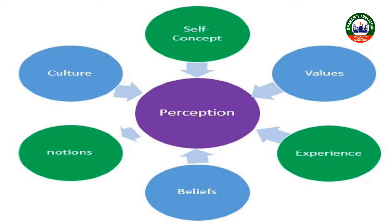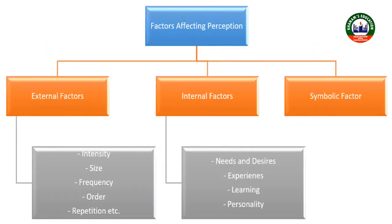The first factor is perceptual learning — based on past experience or any special training that we get. Every one of us learns to emphasize some sensory inputs and to ignore others. Experience is the best teacher for such perceptual skill. For example, someone with experience in artistry can make a much better portrait compared to a person with no experience. So experience and training play an important role in perception.